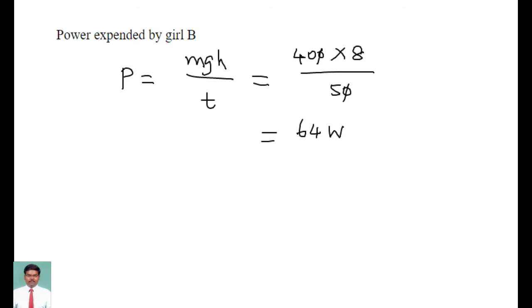The power expended by girl A is 160 watts and by girl B is 64 watts. So girl A uses more power.